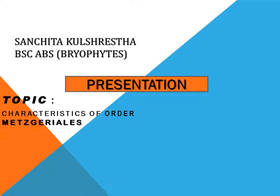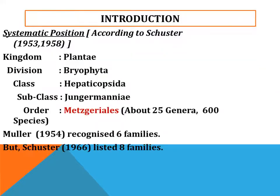The topic for this presentation is characteristics of order Metzgeriales. The systematic position according to Syst 1953 and 1958: kingdom Plantae, division Bryophyta, class Hepaticopsida, subclass Jungermanniidae, order Metzgeriales. It has about 25 genera and 600 species.